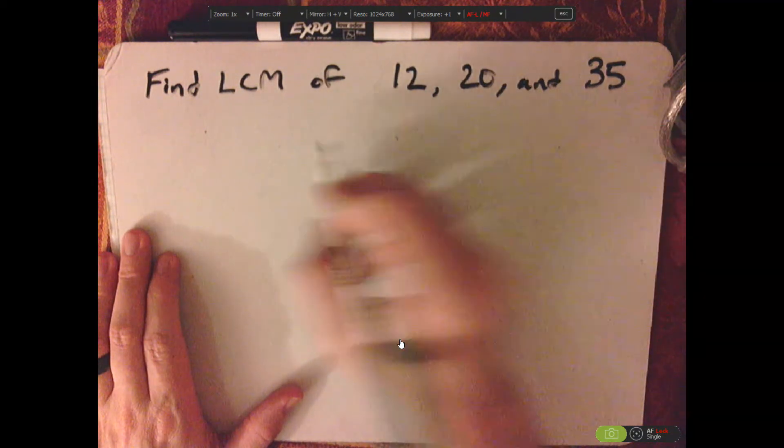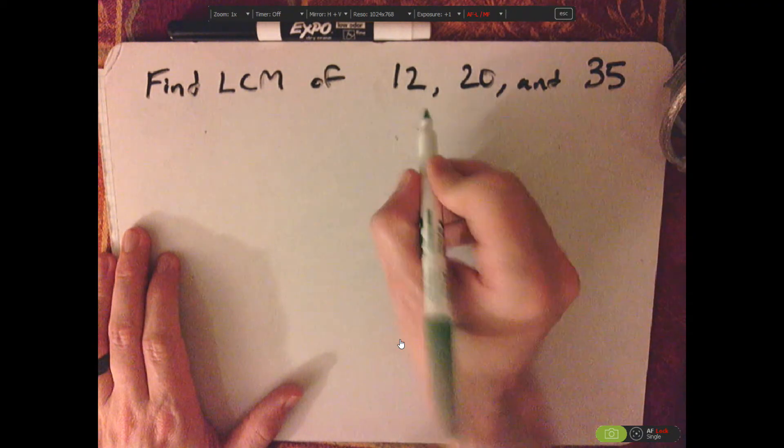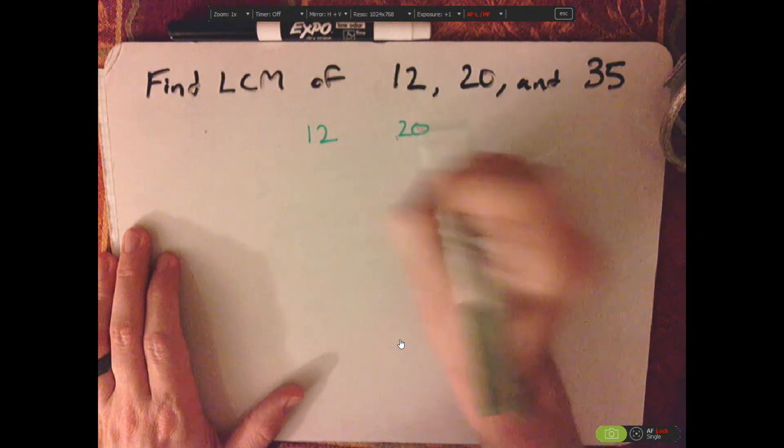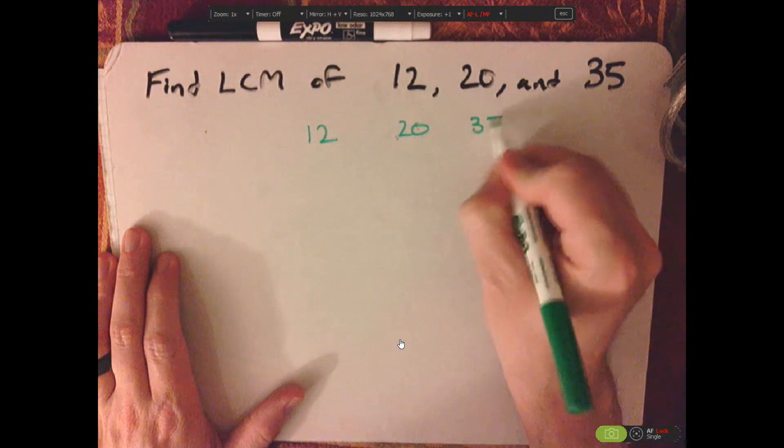So let's write these numbers out. What you want to do is write them out with a space, so 12, 20, 35.